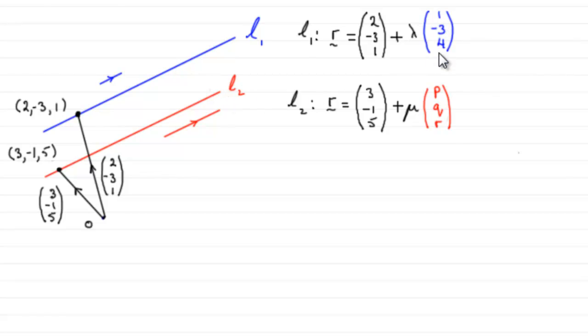This vector at the end here represents a vector parallel to the line, so 1, -3, 4 could represent this vector here. Let's just mark it in as the vector 1, -3, 4, a vector then parallel to the line. And for line L2, P, Q, R would also be a vector that is parallel to the line.